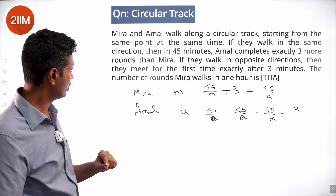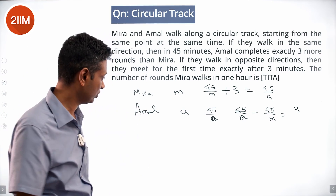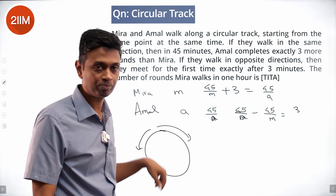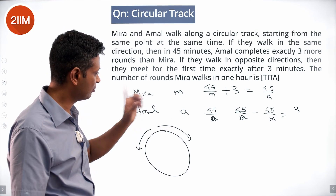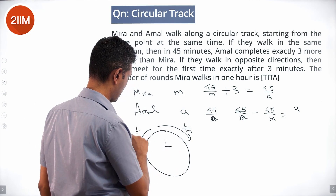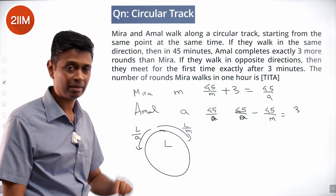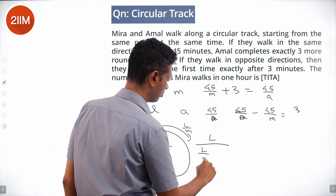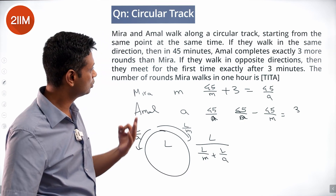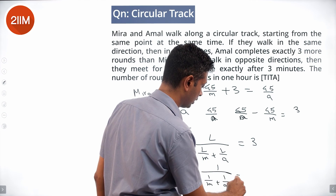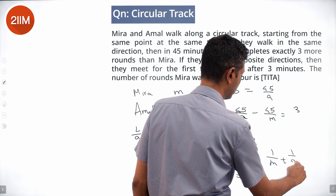Walking in opposite directions, their relative speed is 1/M + 1/A laps per minute. Time to meet = 1/(1/M + 1/A) = 3 minutes, so 1/A + 1/M = 1/3.